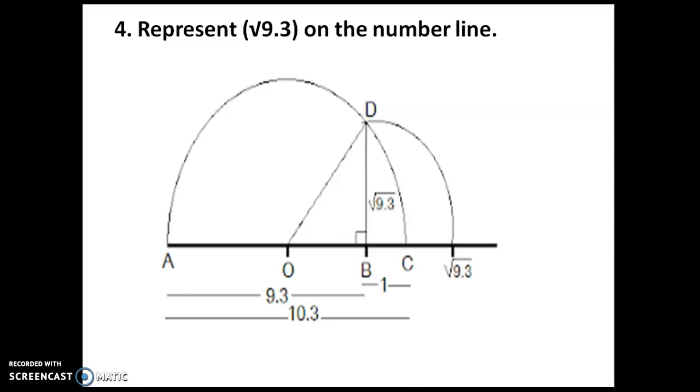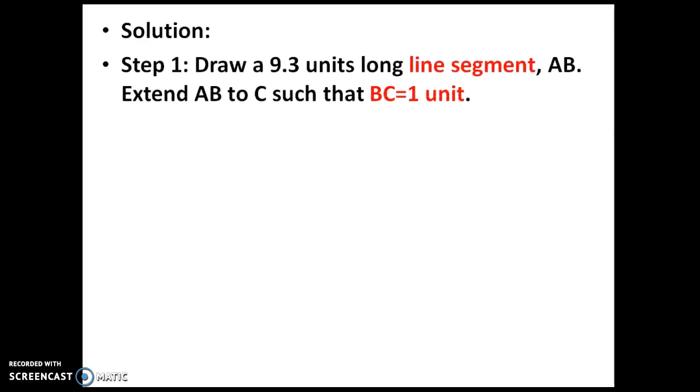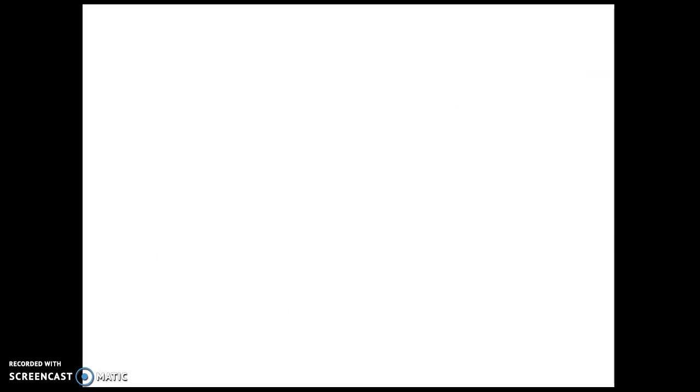Moving to the next problem: represent √9.3 on the number line. The picture I have shown here is the final answer, but for understanding let us go to the steps. First step: draw a 9.3 units long line segment AB. Extend AB to C such that BC equals 1 unit. Let me show the picture. A to B is 9.3 units, then we're extending the line from B to C for 1 unit. So totally AC is 10.3 units. This is the first step.